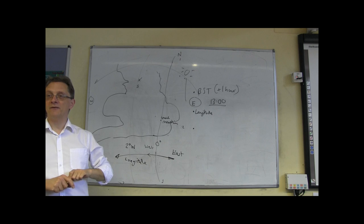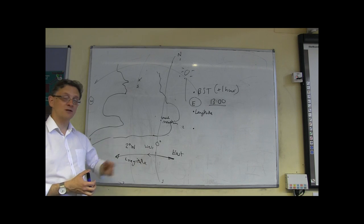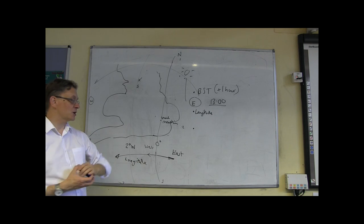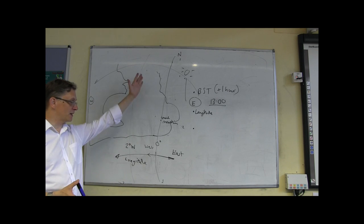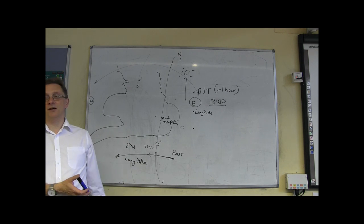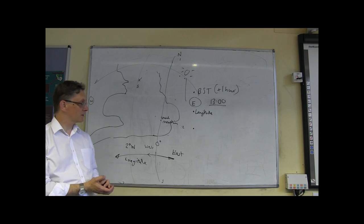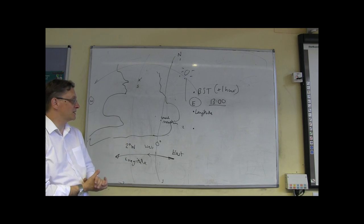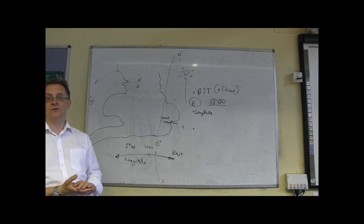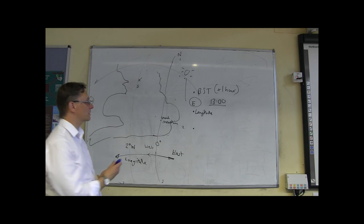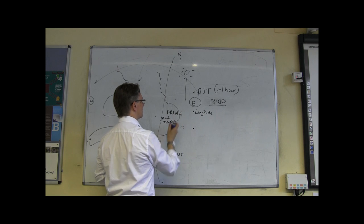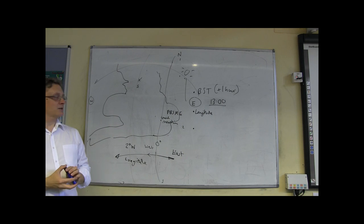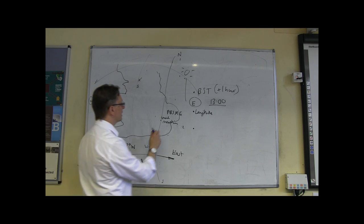There used to be a meridian through Paris — there still is, but it's not used for the measurement of longitude anymore. There used to be ones for important towns in Spain, Italy, and places like that. The world has agreed to use the one through Greenwich as the zero line. Technically, it's now called the Prime Meridian, but it is literally the one that goes through Greenwich.